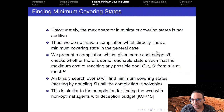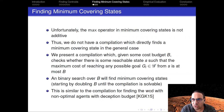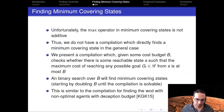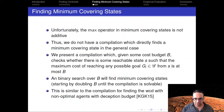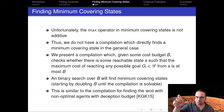Centroids are easy. How can we find minimum covering states? Unfortunately, the max operator in the objective function of minimum covering states is not additive, so it's not easy to find a compilation that directly finds a minimum covering state in the general case. I'm going to show two compilations. The first, given some budget B, checks whether there is a reachable state S such that the maximum cost of reaching any possible goal from S is at most B — checking whether B bounds the minimum covering state cost. We can then do a binary search over B, starting by doubling B until the compilation is solvable, then binary searching for the exact value.